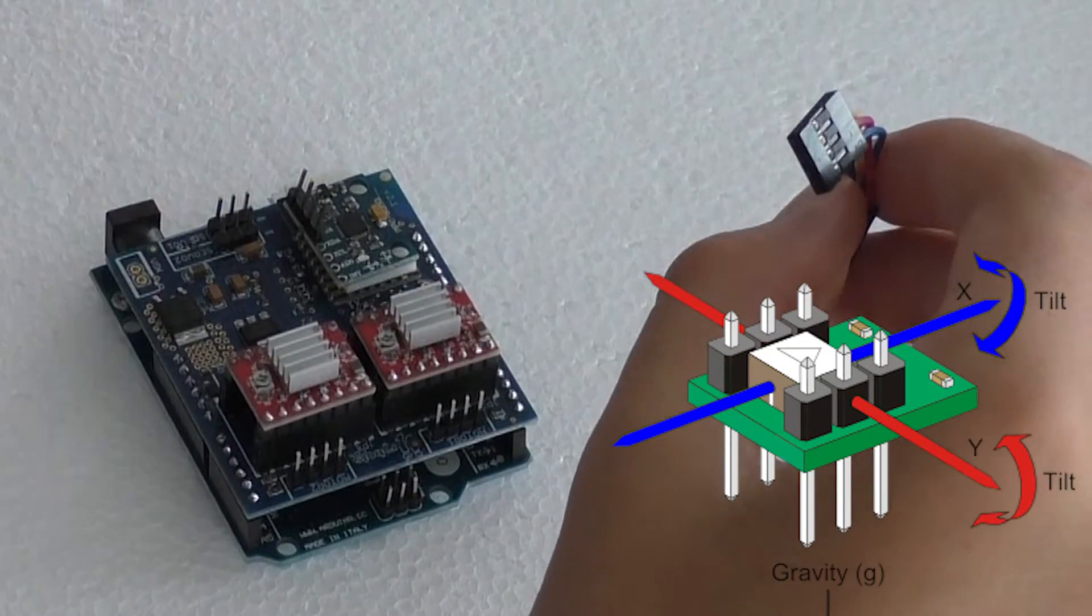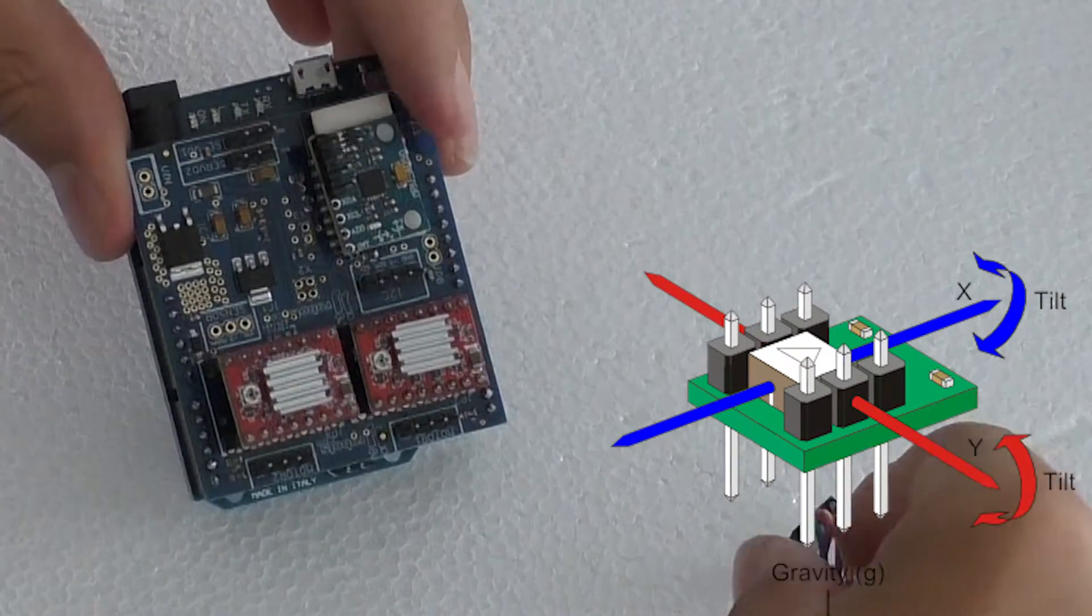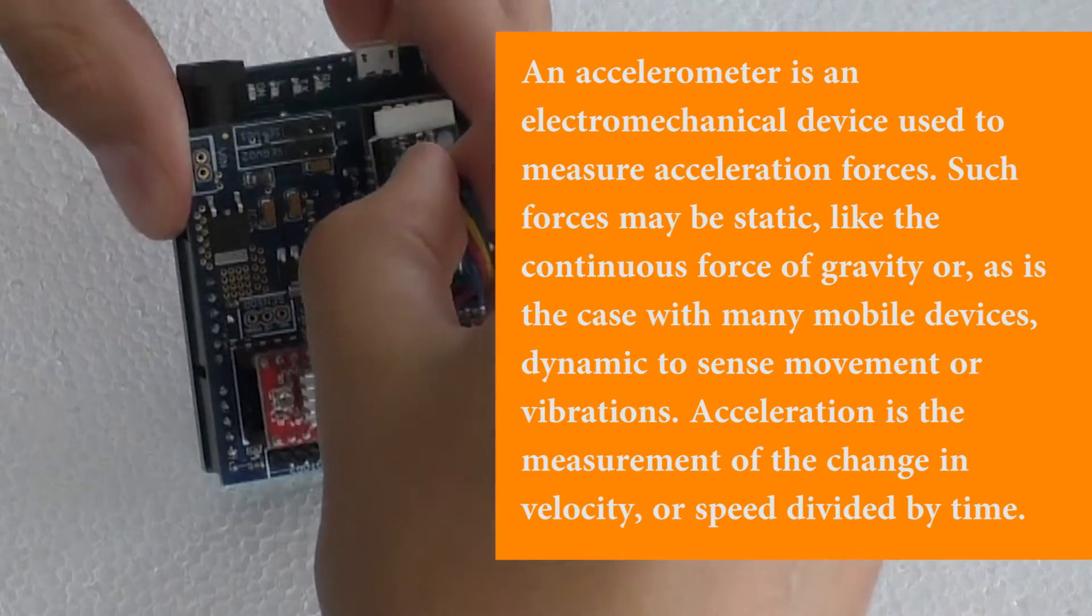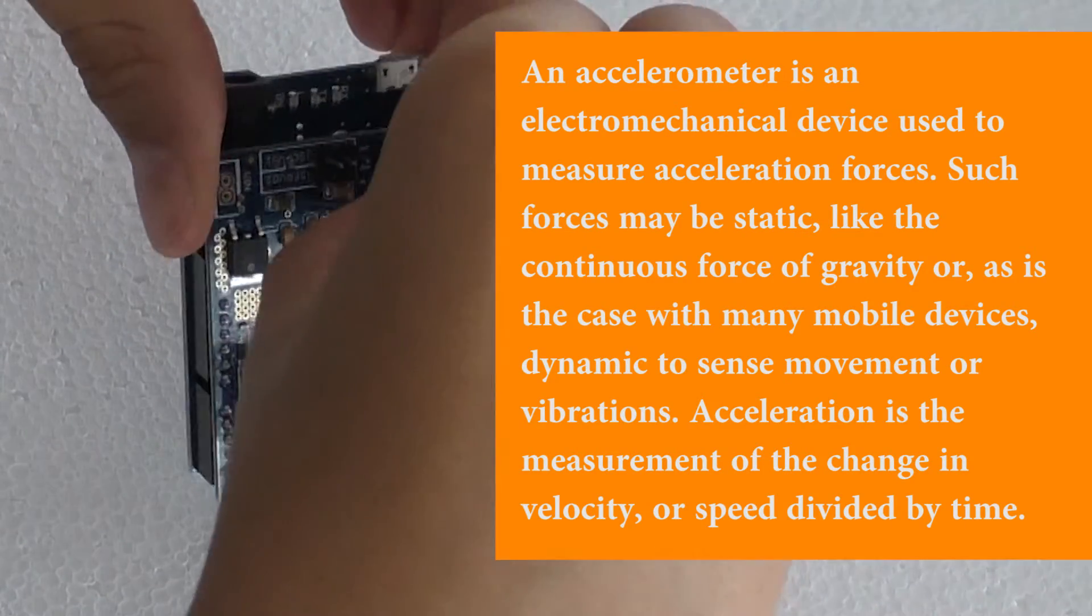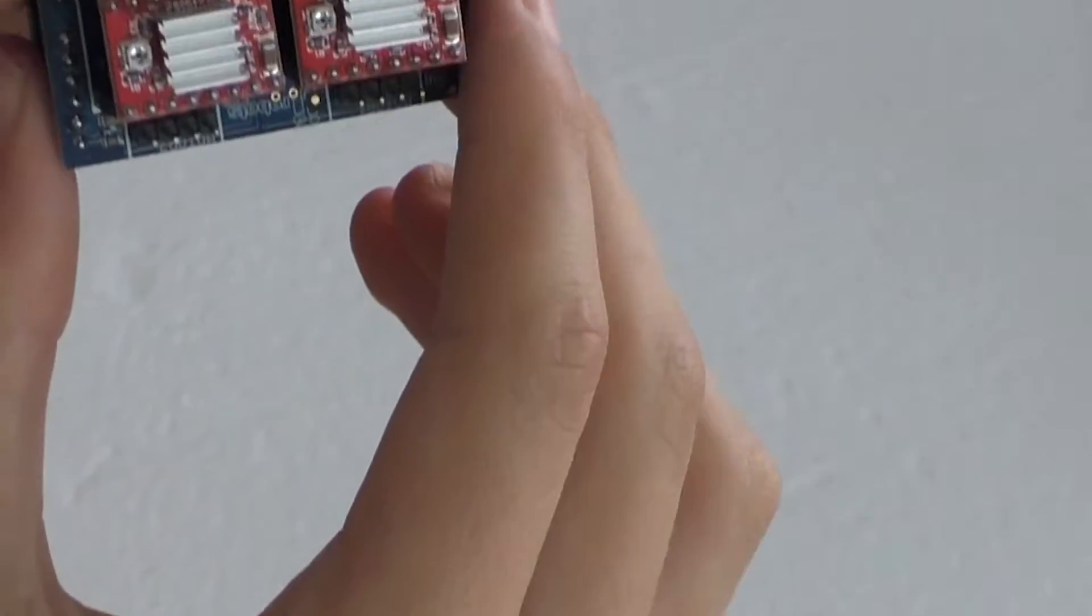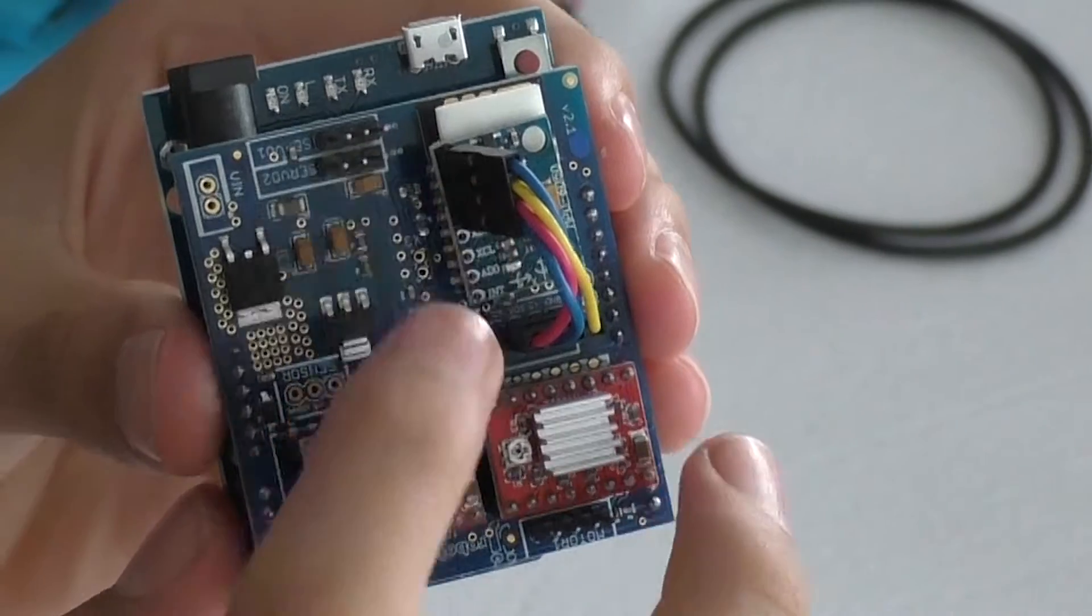Make sure that the pins are facing you when you place it down. Now, get the short wire to attach the accelerometer sensor to the brain. Make sure that the pink wire is on the third pin.